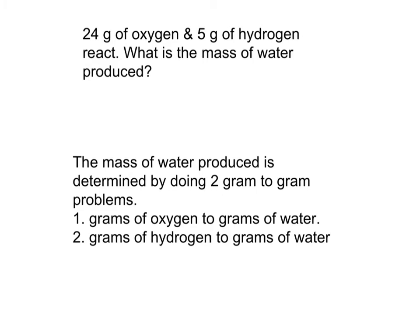In this problem, we're going to start with 24 grams of oxygen and 5 grams of hydrogen. They're going to react, and we want to determine the mass of water produced. To do this problem, you have to do two gram-to-gram calculations: one changing grams of oxygen to grams of water, and one changing grams of hydrogen to grams of water. Notice that water is the product, and we're changing both reactants to one product so we can compare the amount of product produced.